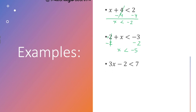Now a two-step inequality. You have to remove two things: the negative 2 and the 3 which is multiplying x. To remove the negative 2, add positive 2 on both sides — negative 2 and positive 2 cancel, leaving 3x less than 9. To cancel the 3, divide both sides by 3. 3 cancels 3, so x is less than 3.